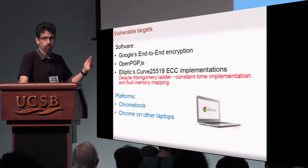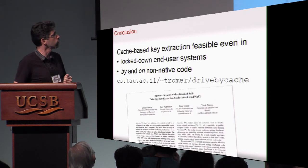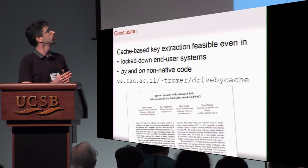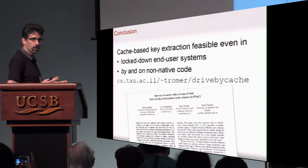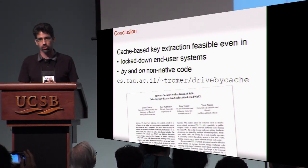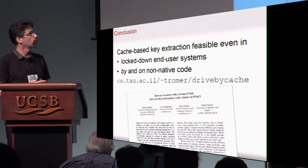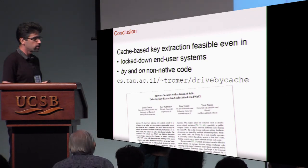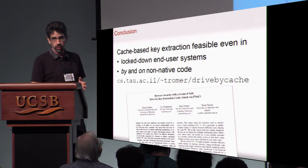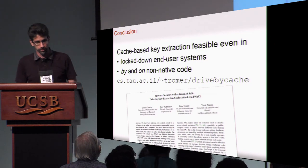This applies to the Chromebook lockdown platform as well as other platforms running Chrome. Cache-based key extraction attacks are possible on end-user devices, including the latest and greatest ones and lockdown platforms, and they are doable by and on non-native code. You can read all about it in our paper. Thank you.